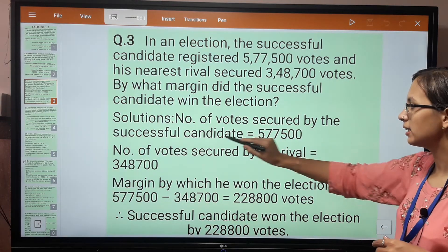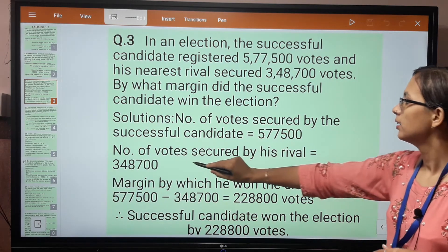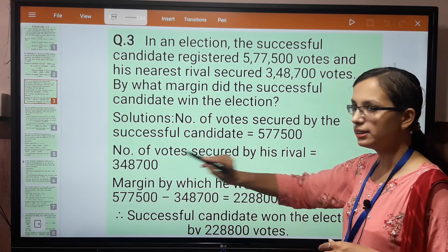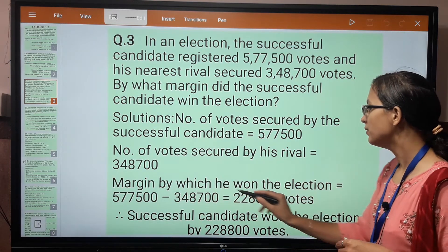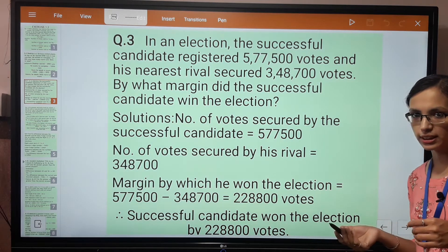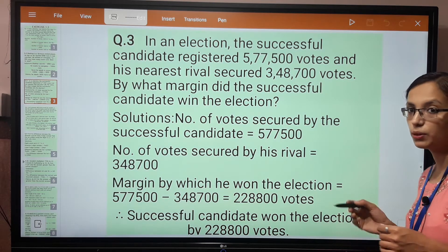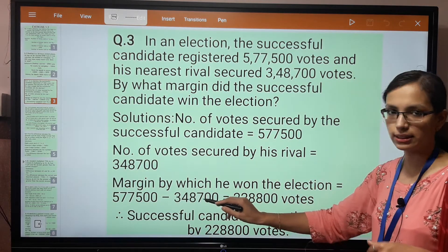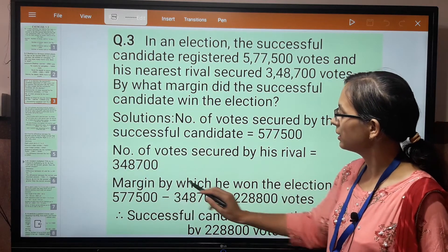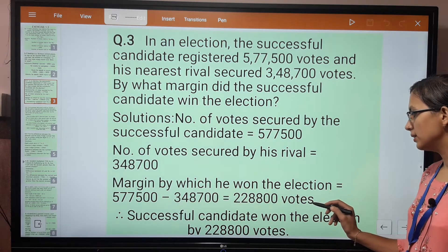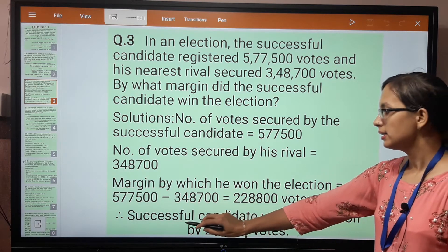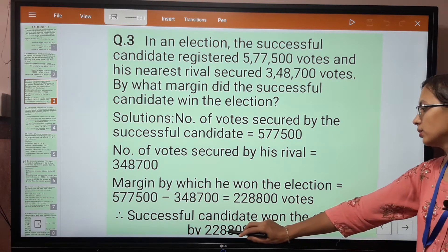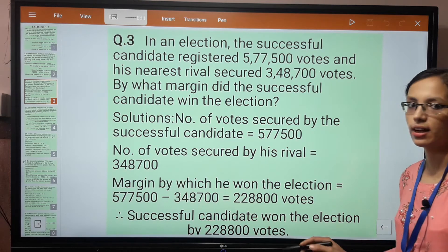Number of votes secured by the successful candidate is this. Number of votes secured by his rival is this. The margin by which he won the election - we will subtract the rival's votes from the successful candidate's votes. The answer is 2,28,800. Hence, the successful candidate won the election by 2,28,800 votes.